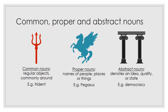Common, proper, and abstract nouns. Common nouns are regular objects that are commonly around. Proper nouns are names of people, places, or things. An abstract noun denotes an idea, quality, or state. For the examples given: a trident is a common noun, Pegasus is a proper noun, and democracy is an abstract noun.